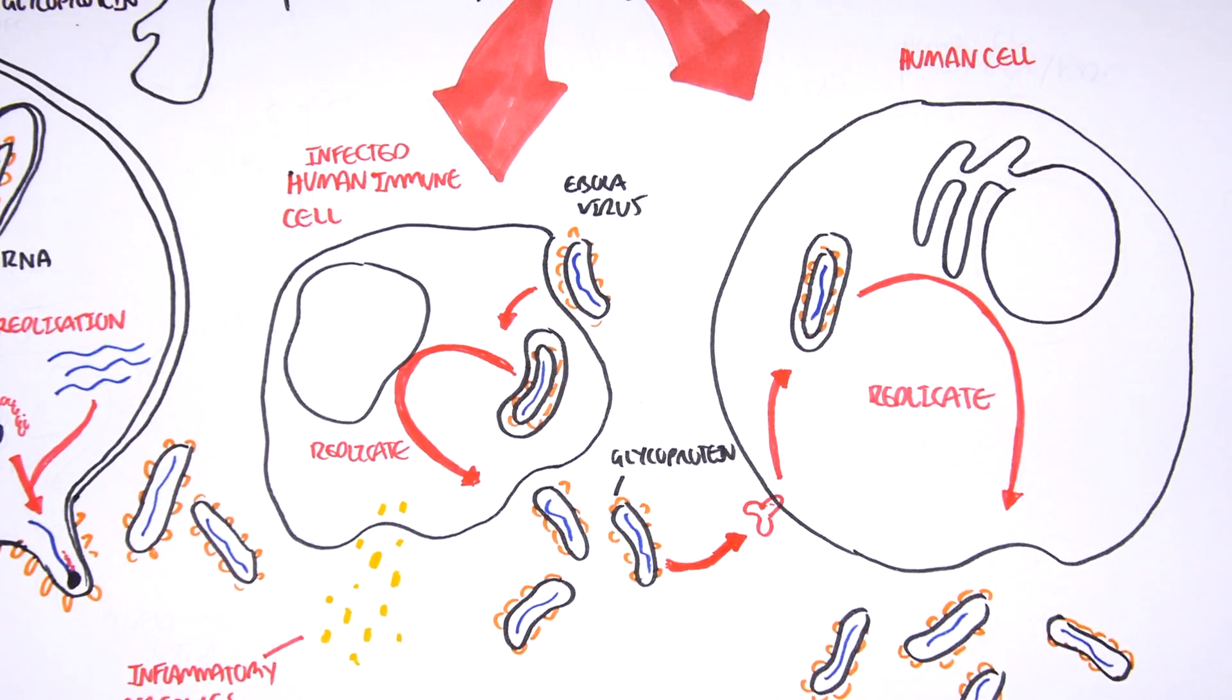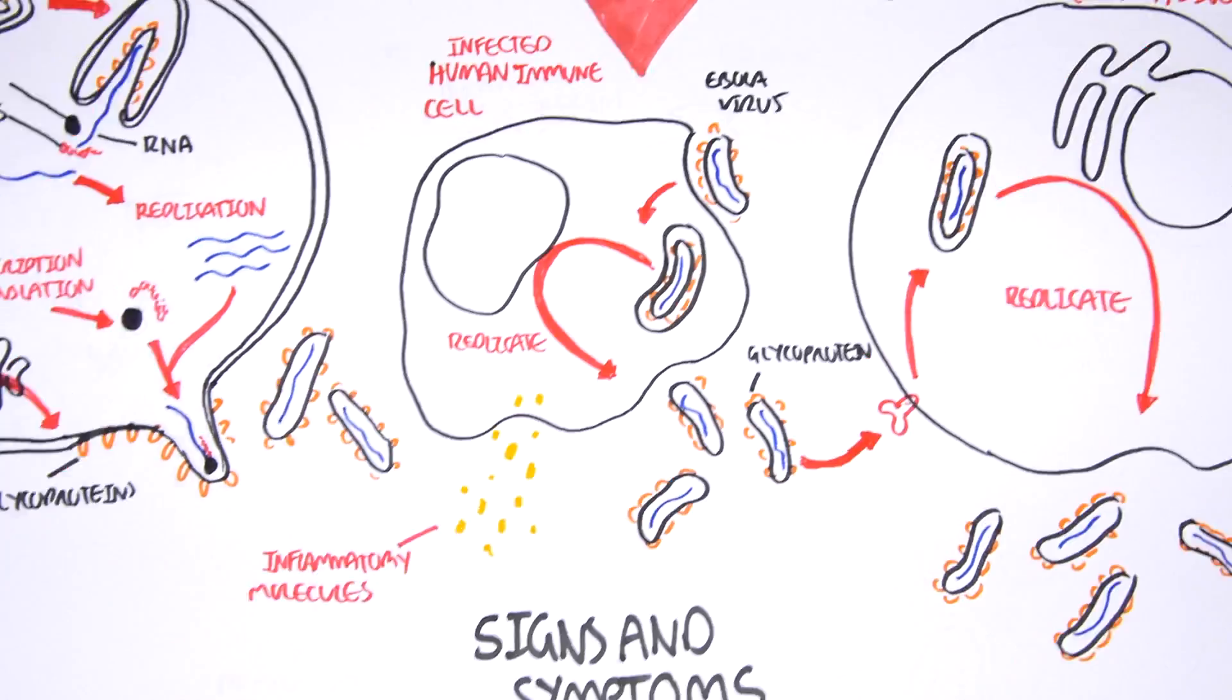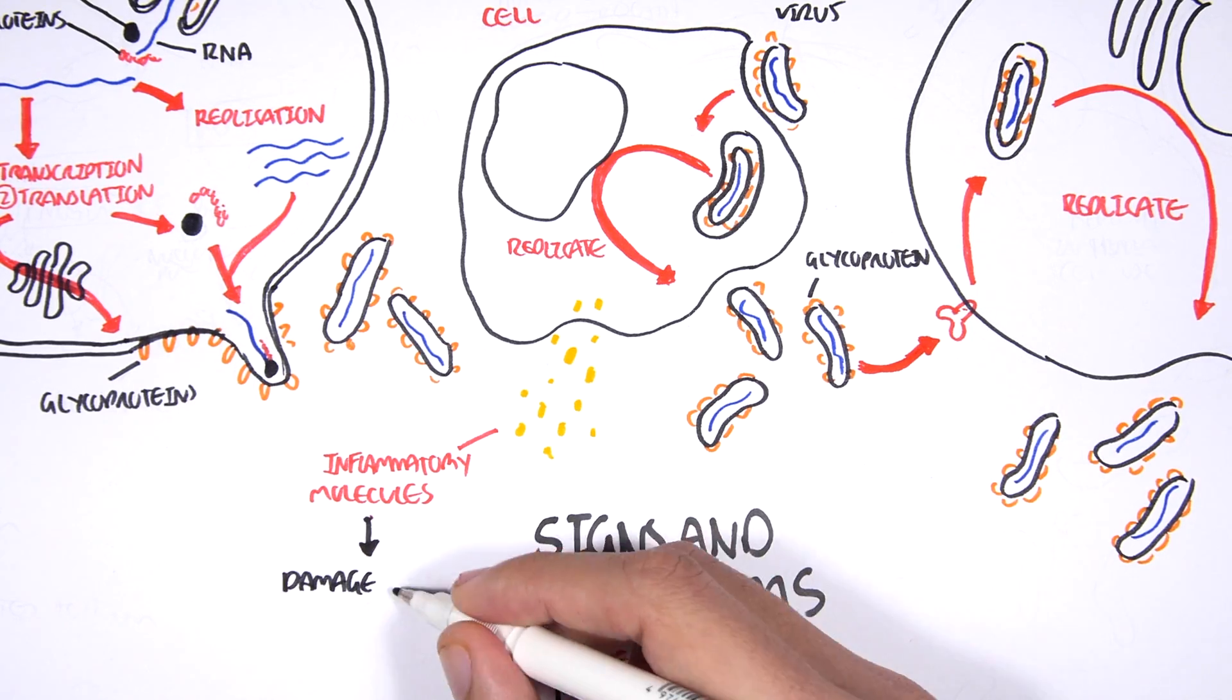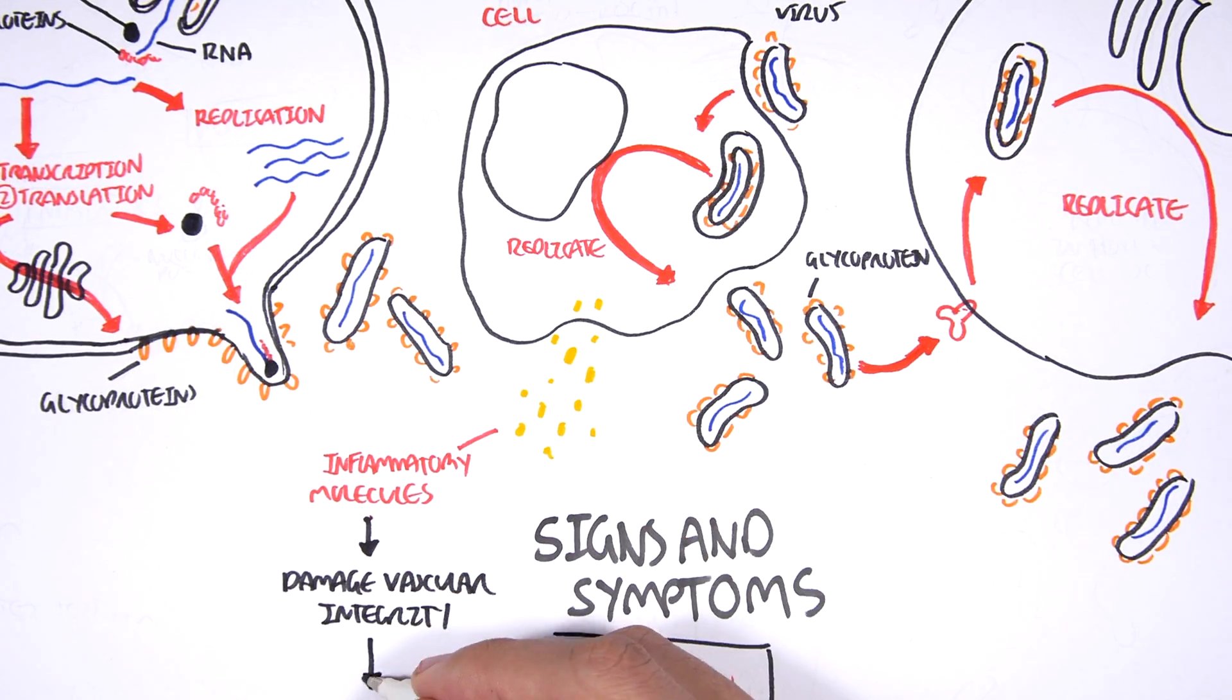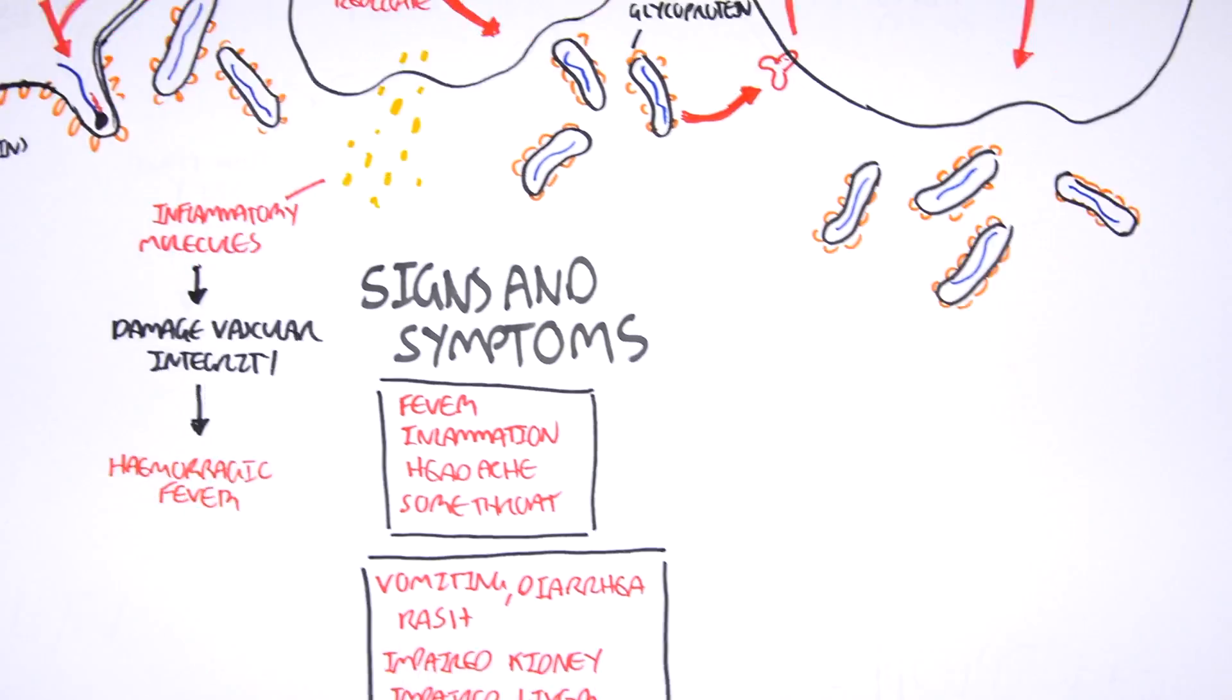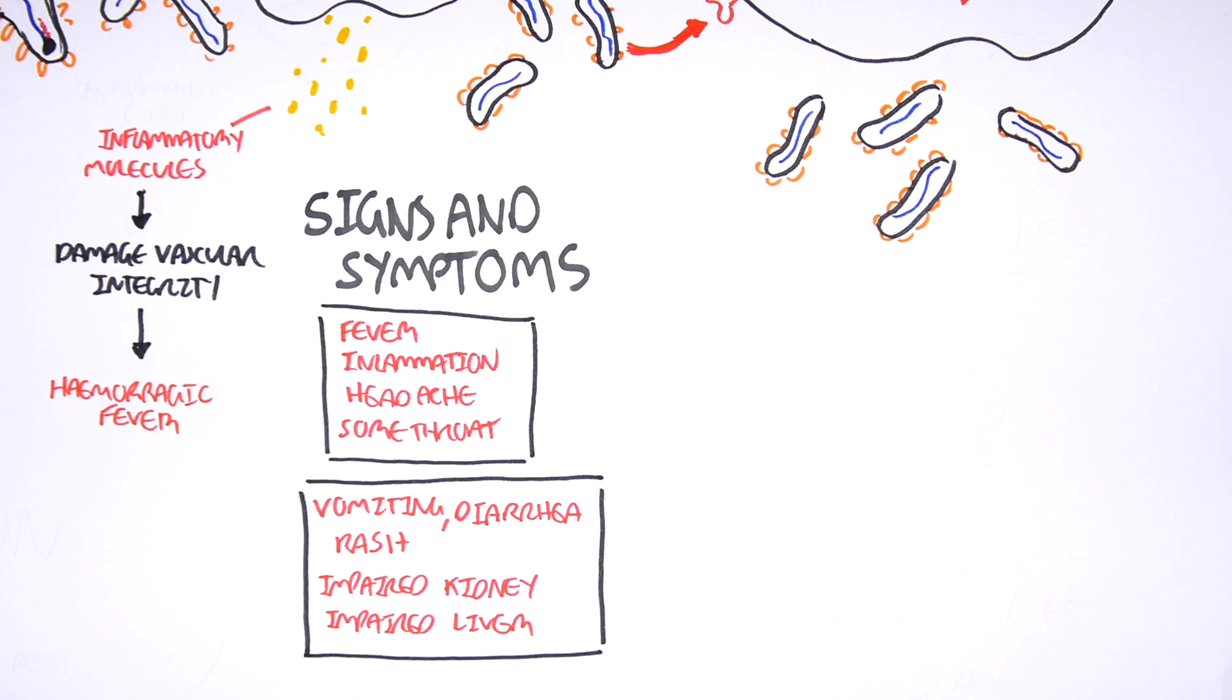The inflammatory molecules released by immune cells and other cells can cause damage to vascular integrity, leading to hemorrhagic fever. However, hemorrhagic fever does not occur in all Ebola virus cases.